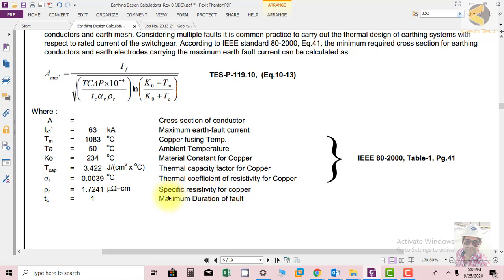Then we have thermal coefficient of resistivity for copper, defined by alpha r. We have specific resistivity of copper measured during testing. We have maximum duration of 1 second. Thermal coefficient means with change of one degree how much resistivity of equipment changes. This is another coefficient: if temperature rises by one degree, how much resistivity will change. Resistivity of any material like conductor depends upon temperature.